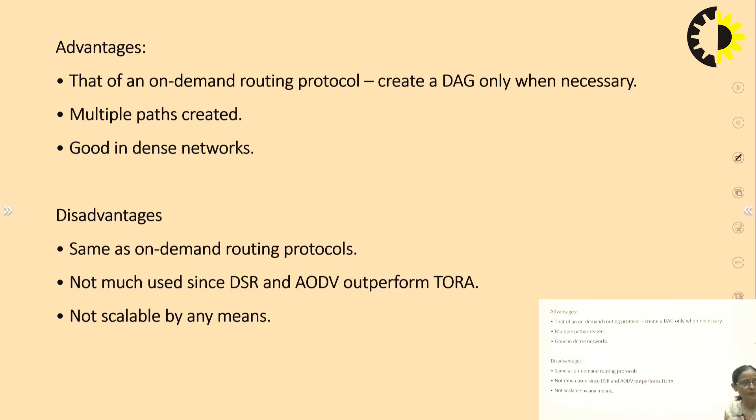But what is the problem? Same as on-demand routing protocols. When we go for the communication, if the communication is very small then a lot of control messages take place in the network. It is a disadvantage in this case. Not much used since DSR and AODV had already outperformed TORA. Scalability is also a problem or issue in the case of TORA algorithm.